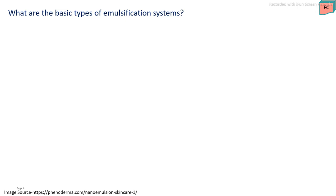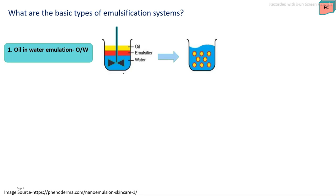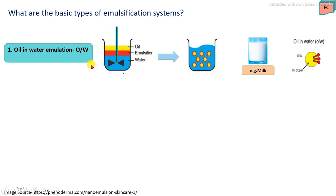These are the basic types of emulsification systems in food product preparation. The first is the oil-in-water emulsion, where oil is in the dispersed phase and water is in the continuous phase. By mixing oil, water, and emulsifying agents followed by high-speed mixing or homogenization, the oil disperses into small droplets, resulting in a homogeneous food product. For example, milk, where oil constituents are in the dispersed phase and water is in the continuous phase.